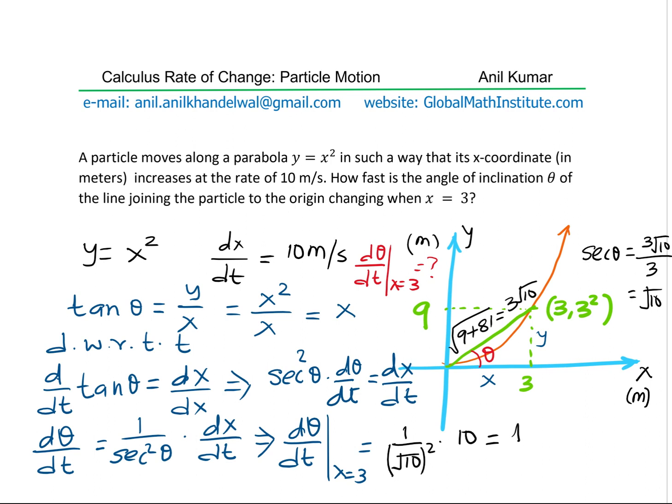Now that makes 10 divided by 10 as 1. So we have 1 radian per second as the answer for rate of change of angle in this situation. So I hope that helps you to understand how we have found our answer.